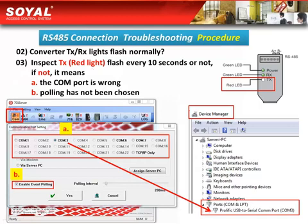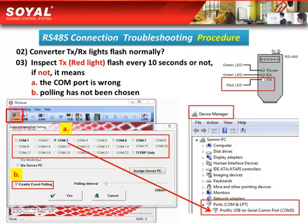If the TX or Rx light is not flashing normally, there are two possible reasons. First, the COM port may be wrong — use the Device Manager to confirm your COM port. The second possible reason is that polling has not been enabled. Here you can see the 'Enable Event Polling' option. Remember, event polling must be selected.